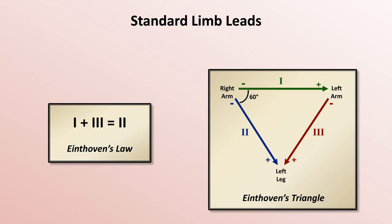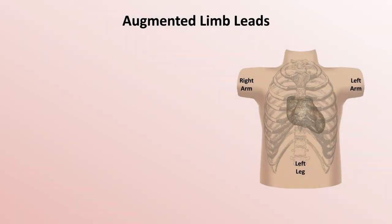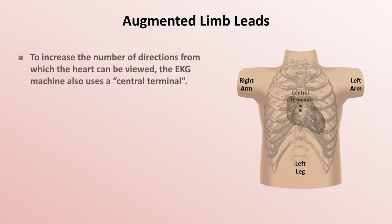I'm going to set the standard limb leads aside for a moment and move on to the augmented limb leads. One of the early challenges Eindhoven faced was that his 3 leads only provided a very limited view of the heart's electrical activity. It could only observe that activity from 3 directions.